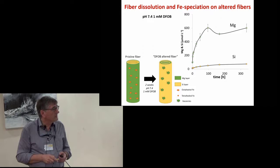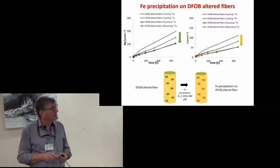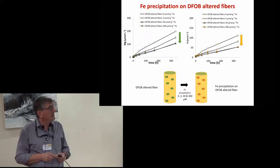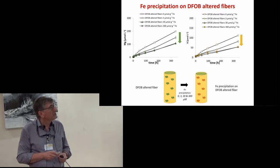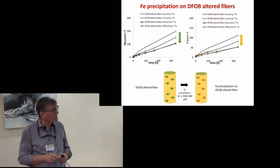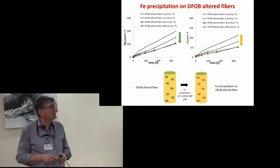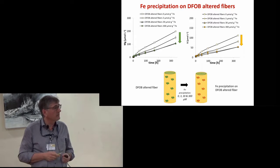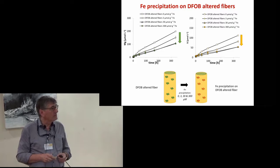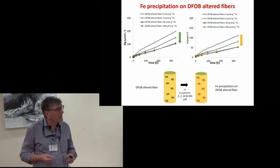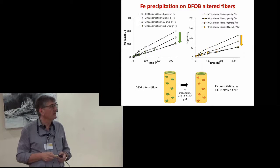Putting this DFOB altered fiber again for up to two weeks into a physiological solution, the mobilization of magnesium and silicon increases linearly up to 200 and 120 micromoles per liter. However, when putting extra iron—three micromole per gram or 30 micromoles per gram—on the fiber surface, the dissolution rate is drastically reduced, probably because these iron atoms go into the vacancies of the exposed silicon layer. Putting 300 micromoles per gram extra iron on the fibers does not further decrease the dissolution rate, most likely because all the vacancies are already filled with iron atoms.